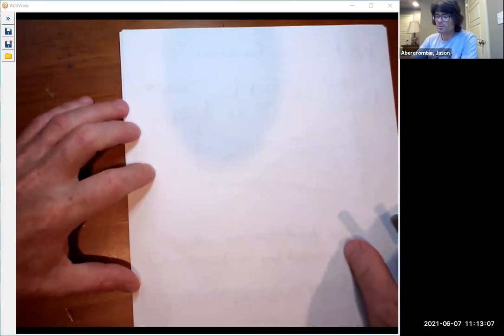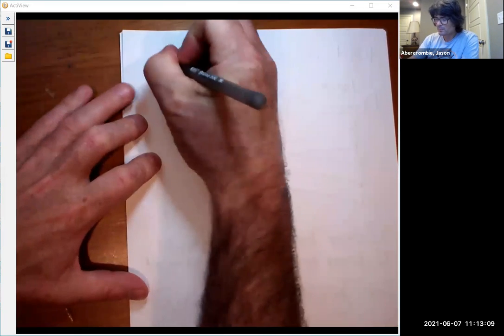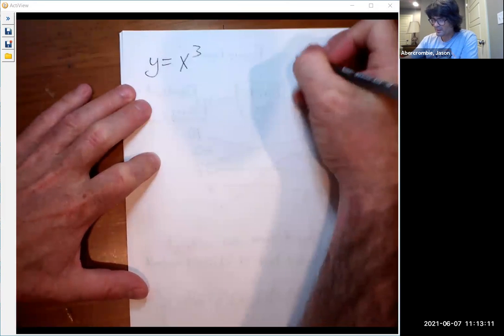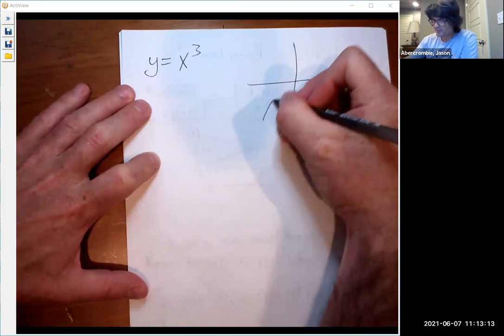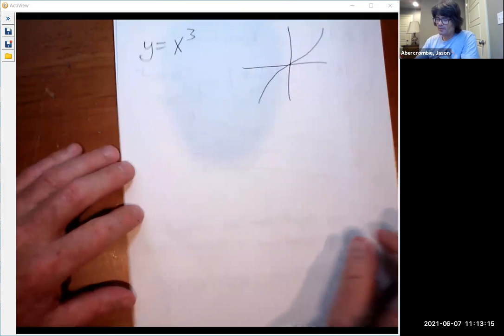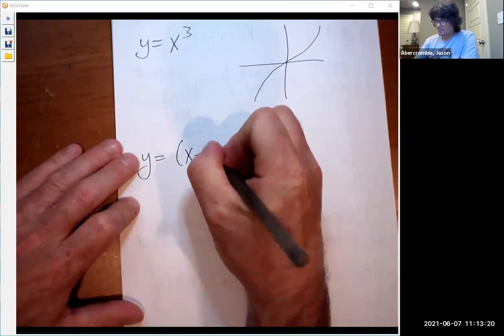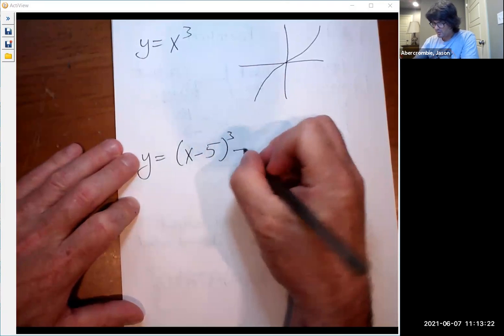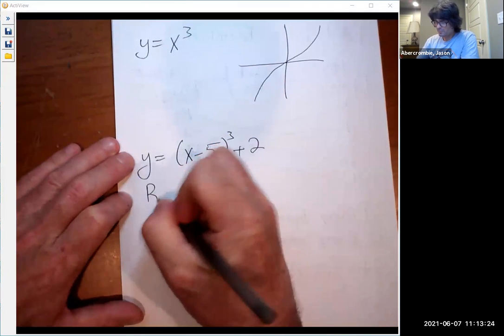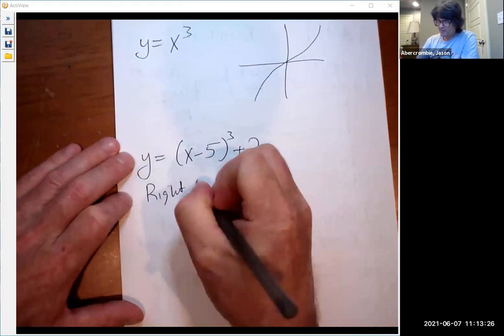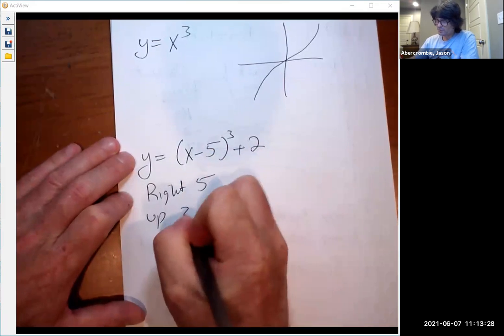Let's try one or two more. If you did a cube, a cube looks like this. Roughly kind of a squiggle. If you wanted to do y equals x minus 5 cubed plus 2, right 5, up 2.